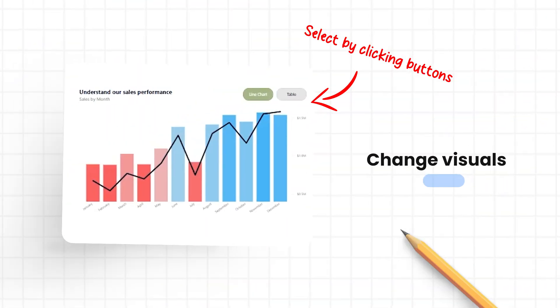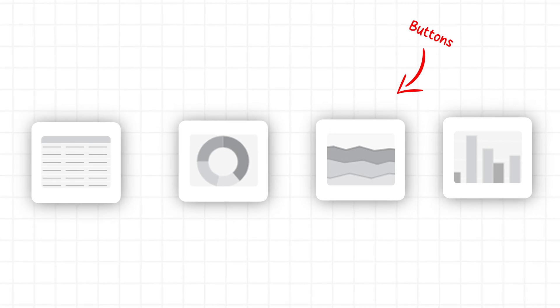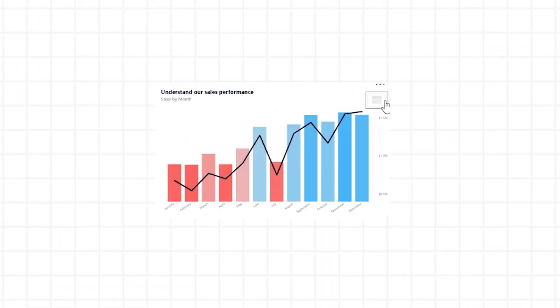Today we're going to learn how to change your visuals based on a selection. This is a common request because canvas space is limited in Power BI. By utilizing the bookmark navigator, we can create interactive buttons that allow you to change between your visuals. As a bonus, we're also going to learn how to create icons that show a preview of the visual you're about to switch to. This is really neat and easy to implement.